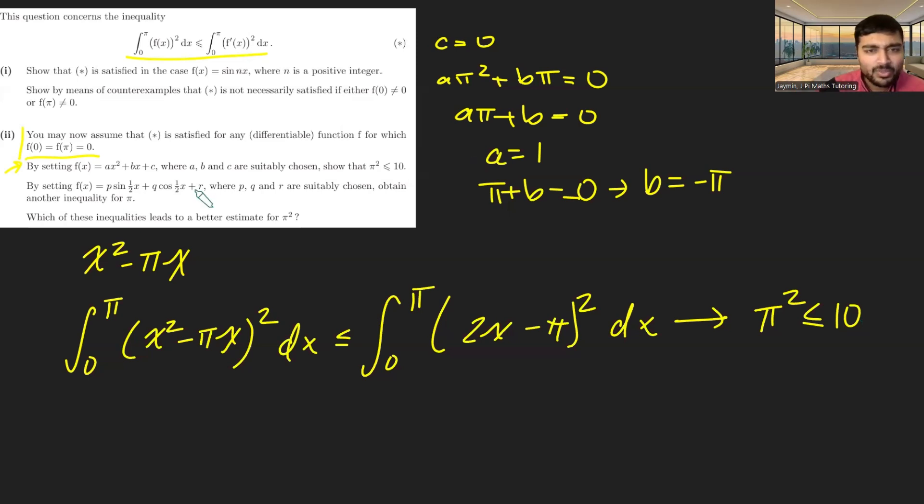So let's consider that part done. Let's look at the next bit. We want to now consider f(x) to be p·sin(x/2) + q·cos(x/2) + r. Again, we could have some scaling on p, q, and r. So in fact, we only need to work out two of them. And again, we're going to use the fact that f(0) and f(π) are both zero.